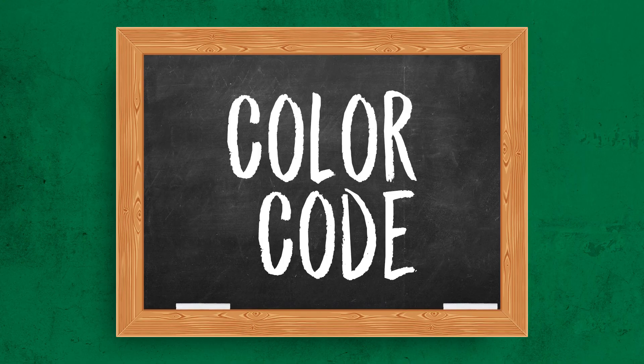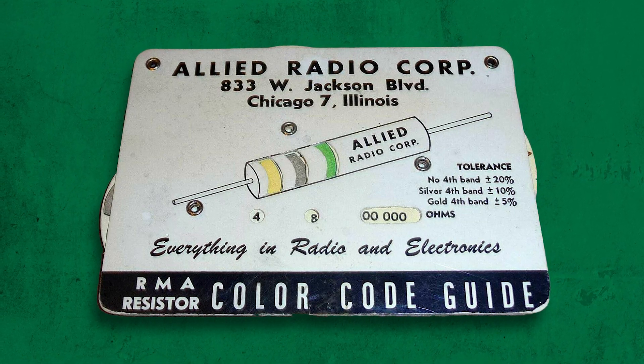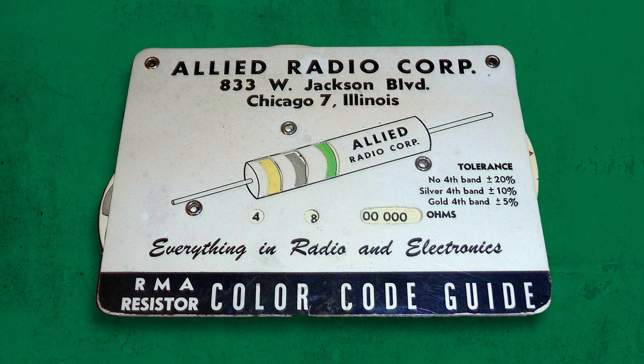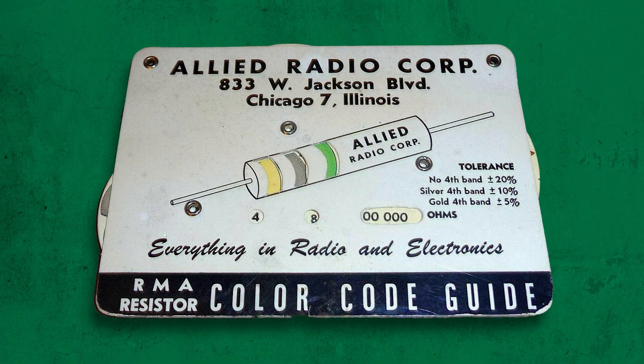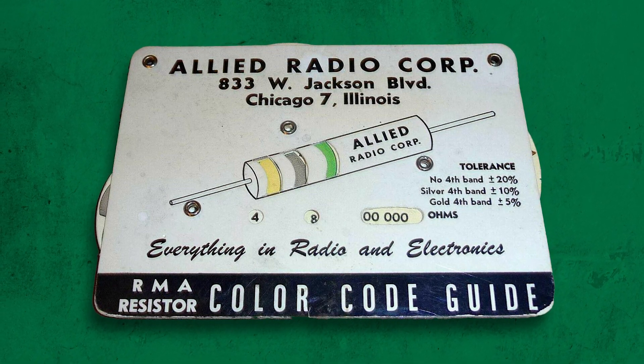Color code. A system in which numerical values are assigned to various colors. Colored stripes are painted on the body of resistors and sometimes other components to show their value. In the world of DMR, color code represents a number which is used in place of a PL tone or a CTCSS tone.